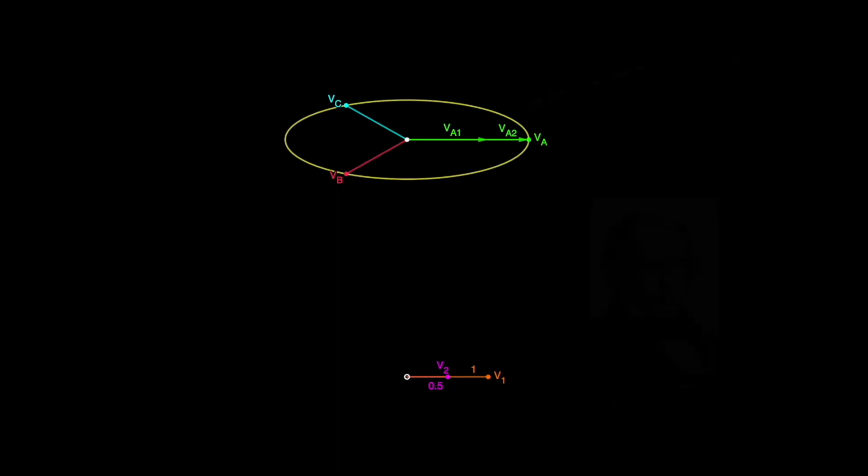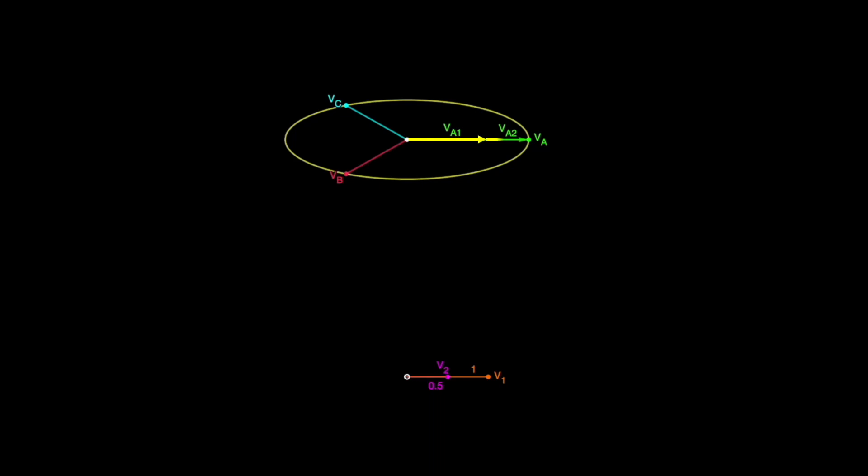The long axis of this ellipse, also called the semi-major axis, is just the sum of the v1 and v2 phasors, and the short axis, also called the semi-minor axis, is just the difference of the v1 and v2 phasors.